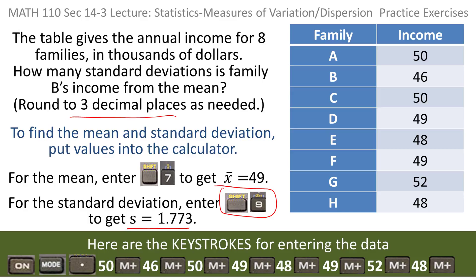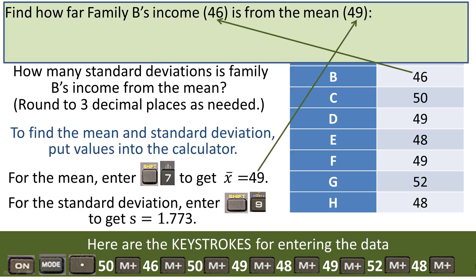Now the problem asks us to find the number of standard deviations the income is for family B from the mean. So we're measuring in standard deviations. How many standard deviations are inside the difference between family B's income and the mean? Well first of all if I want to find how far something is from something else I subtract.